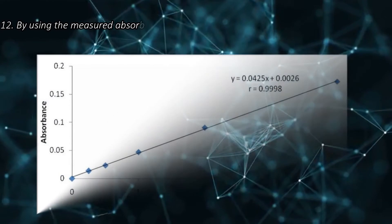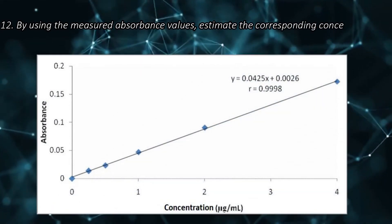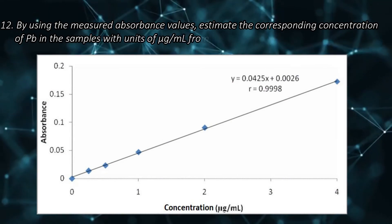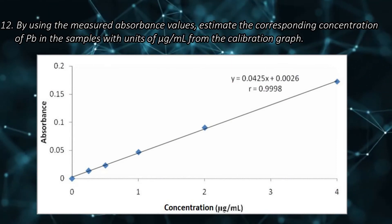Step 12. By using the measured absorbance values, estimate the corresponding concentration of lead in the samples with unit of microgram per milliliter from the calibration graph.